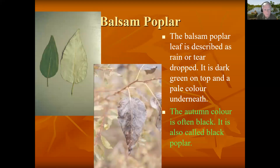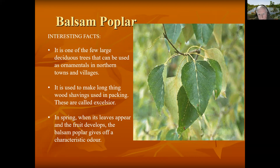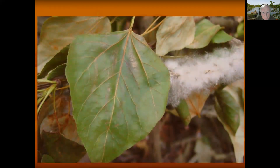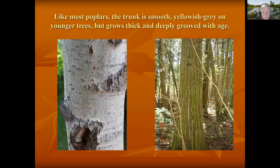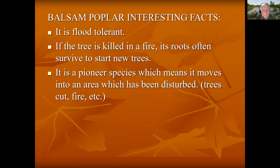Balsam poplar is the hardest of the poplars to identify. The autumn color is often black, so it is also called the black poplar. The shape is much like a teardrop or raindrop with very small teeth around it. The trunk looks somewhat like a white birch, but it is not peeling. An older balsam poplar, as you can see on the right, starts to have ridges and looks more like we think of trees with their trunk and bark. It is flood tolerant.